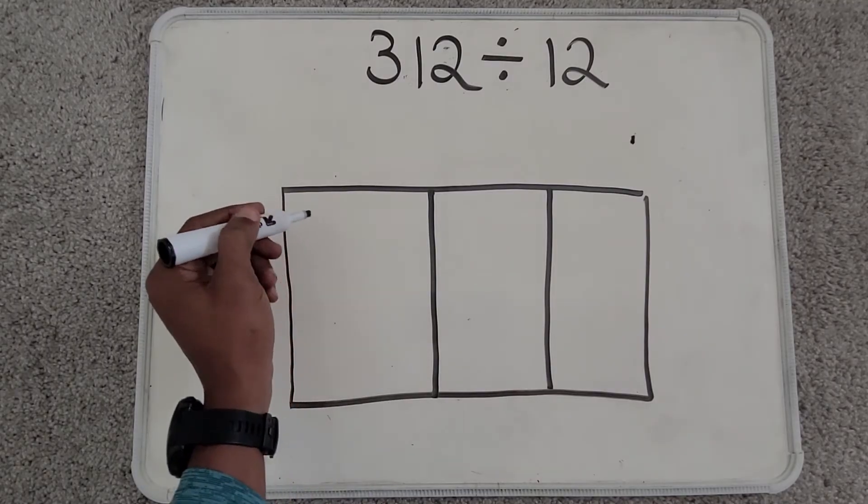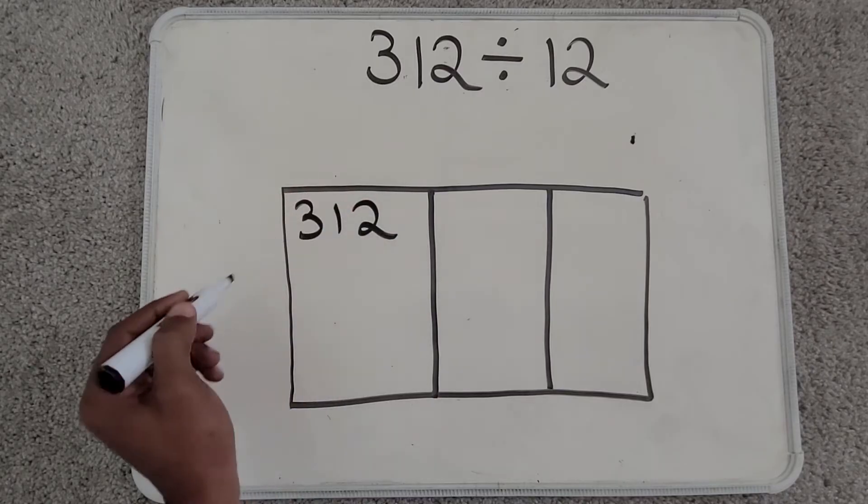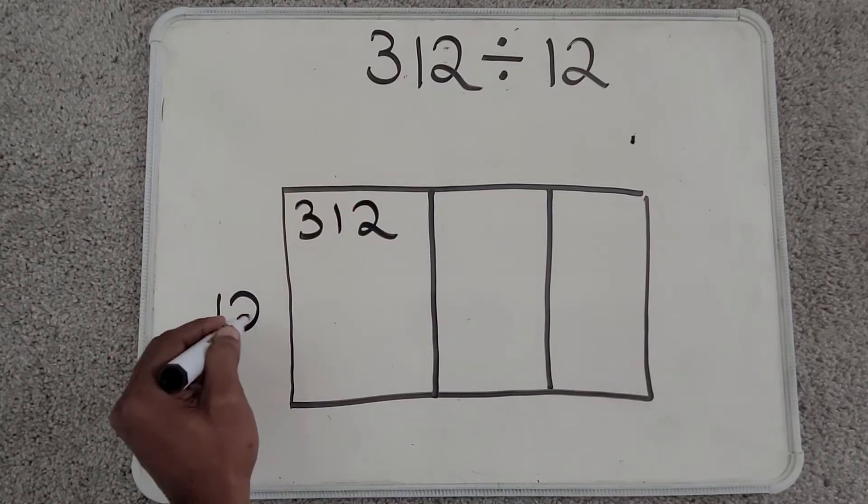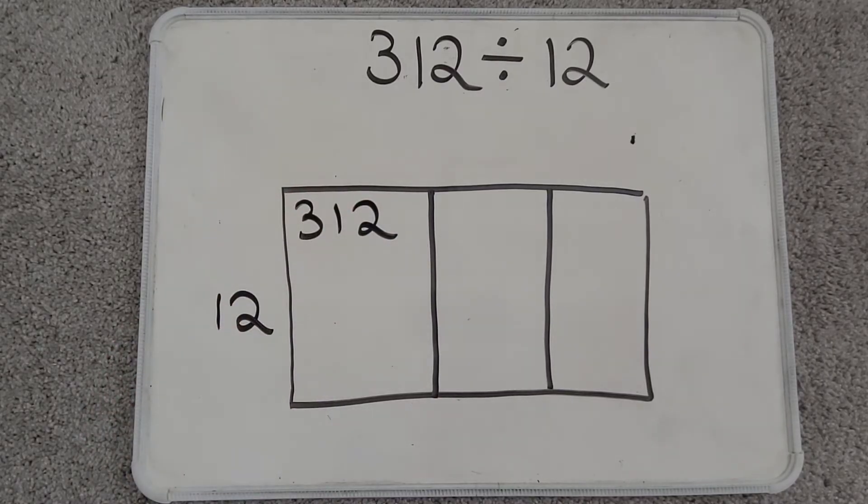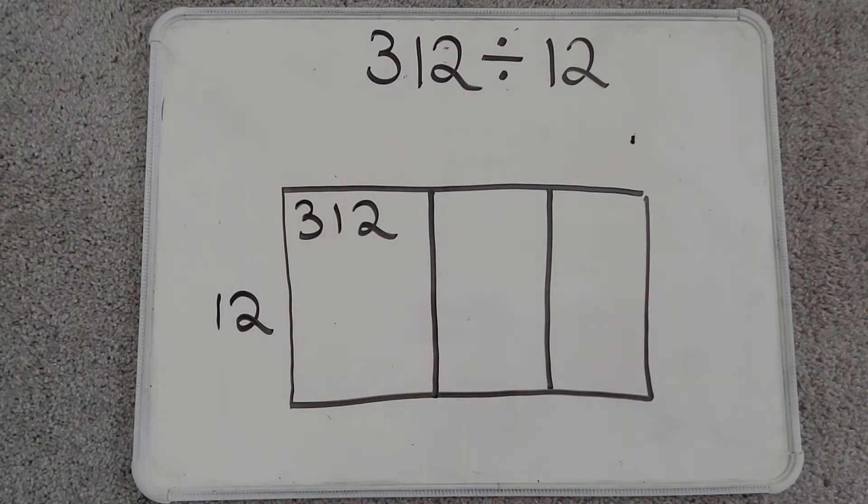My first step, I need to write my dividend on the inside of the first box and my divisor on the outside. Now when I find area, I multiply the length times the width. So I have to decide on a number that I can multiply by that I can subtract from 312.